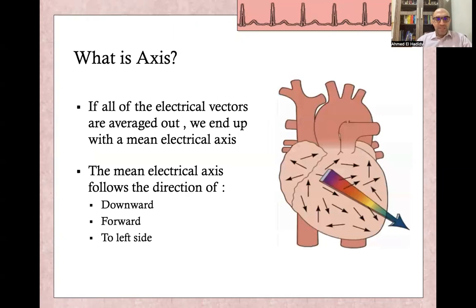What is the axis? Axis is the summation of all vectors. So if all electrical vectors are averaged out, we end up with the main electrical axis for the heart. Normally the main electrical axis of the heart is downward, forward, and towards the left side. This is the axis.